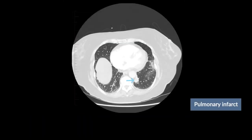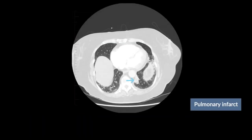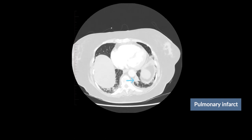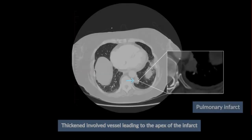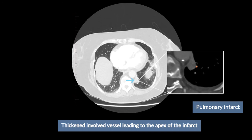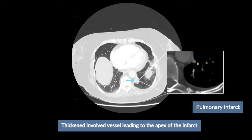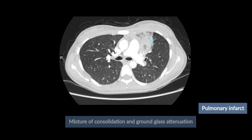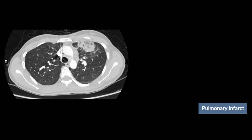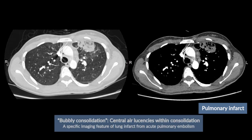Pulmonary infarct typically appears as a region of consolidation or ground glass attenuation that is wedge-shaped or rounded. Look in the region of the lungs supplied by the involved vessels. They can be a mixture of consolidation and ground glass attenuation, and some contain air lucencies inside.